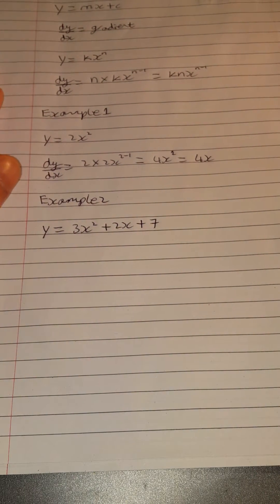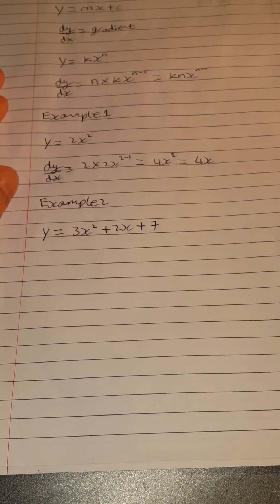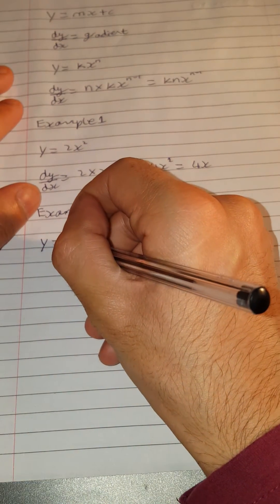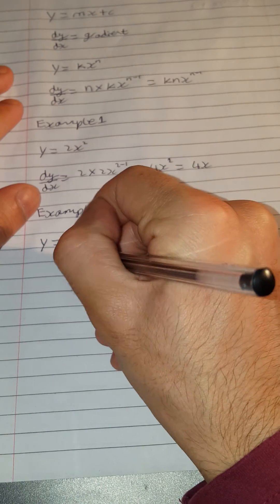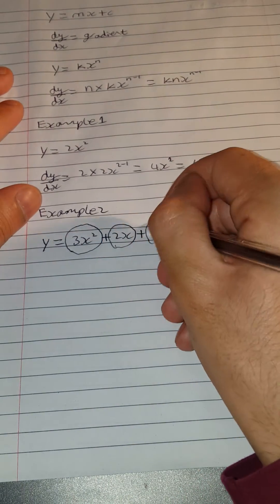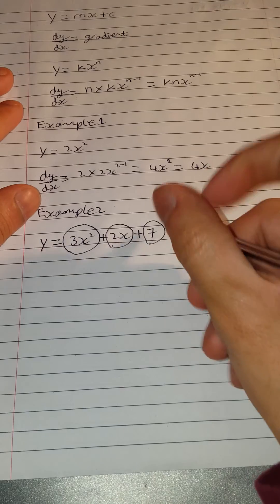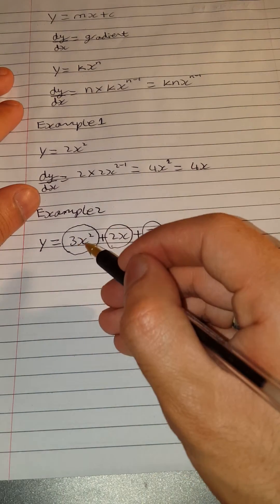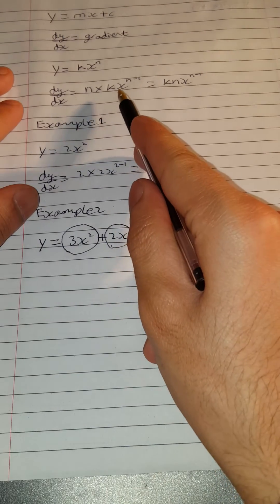Now you must be already thinking that this looks really difficult, but it actually isn't. All you need to do is look at all three parts individually because you're just adding them. If you were subtracting them, it would have been the same. You just look at them individually and apply this method to it.